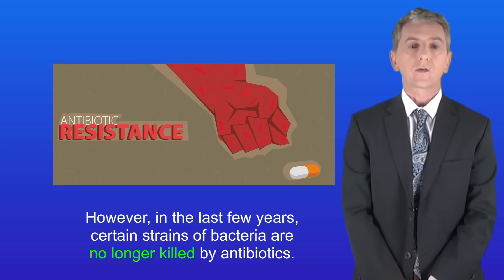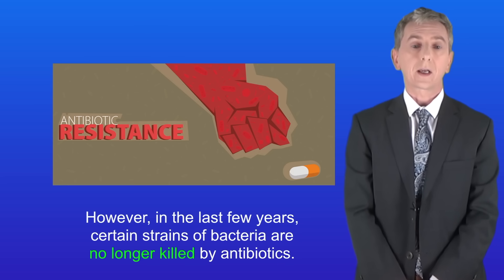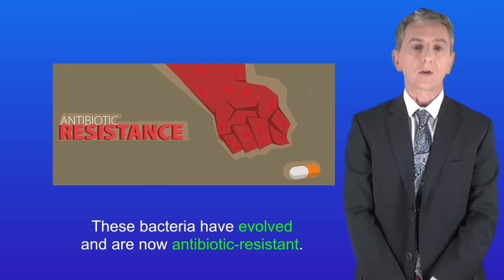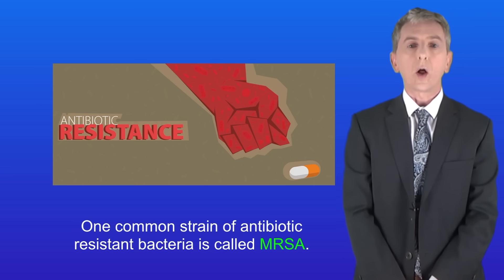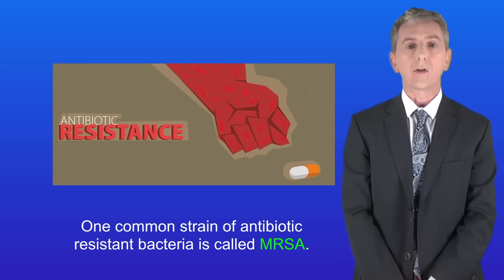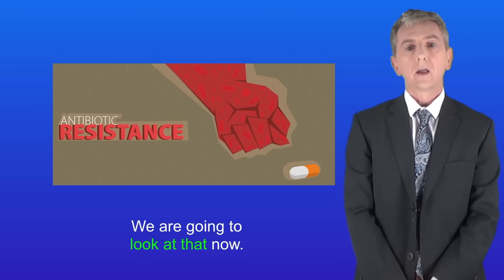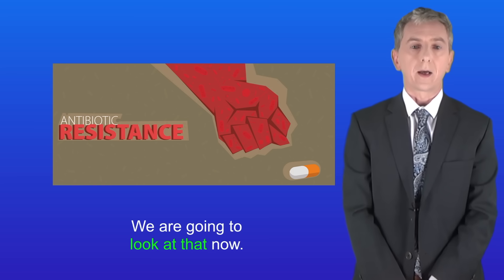However in the last few years certain strains of bacteria are no longer killed by antibiotics. These bacteria have evolved and are now antibiotic resistant. One common strain of antibiotic resistant bacteria is called MRSA. In the exam you could be asked to describe how antibiotic resistance happens, so we're going to look at that now.